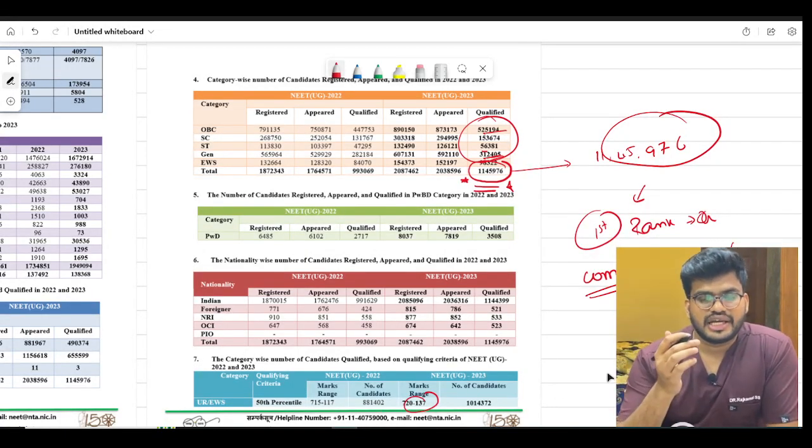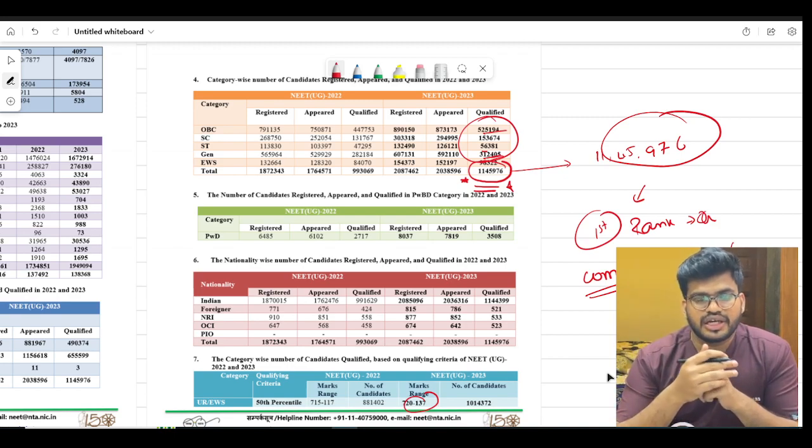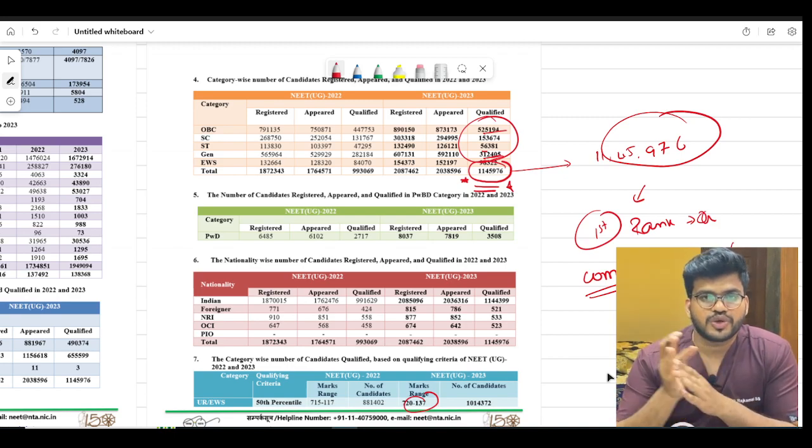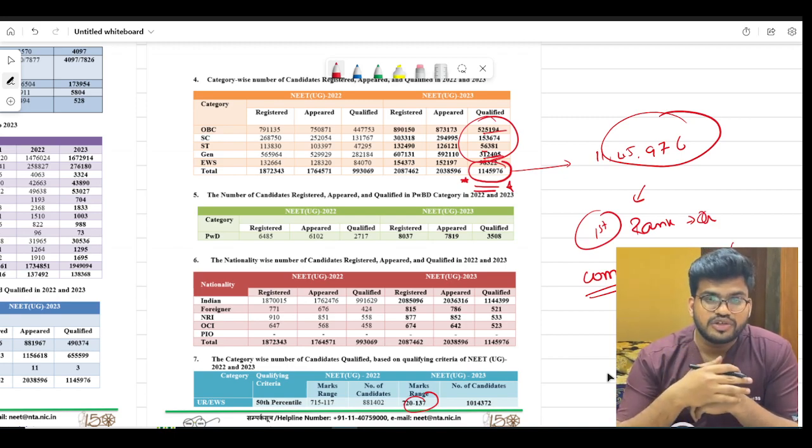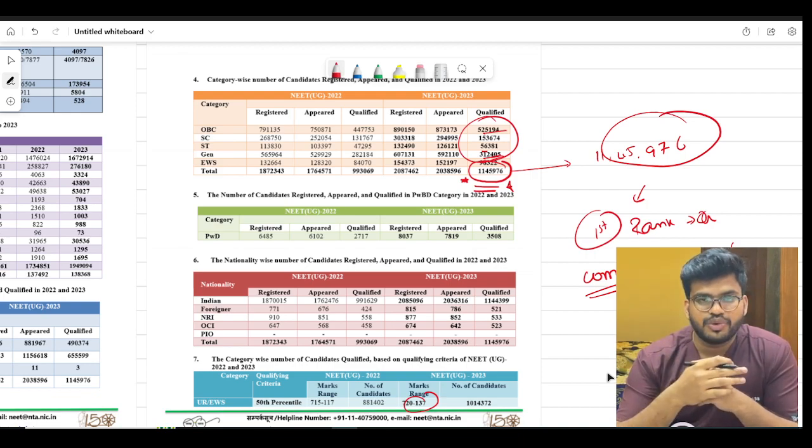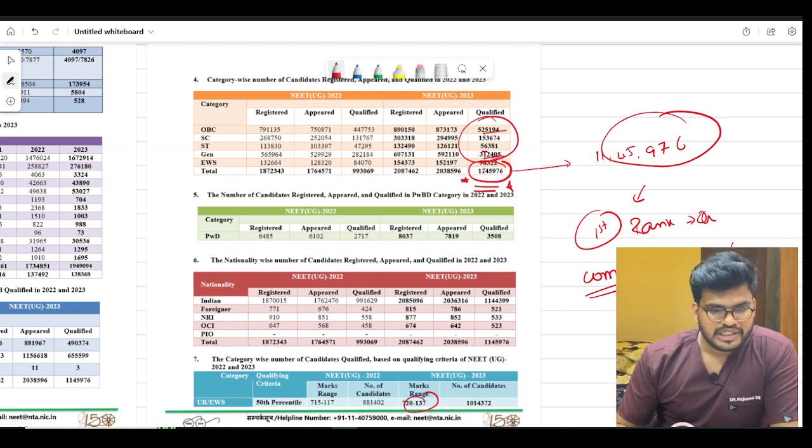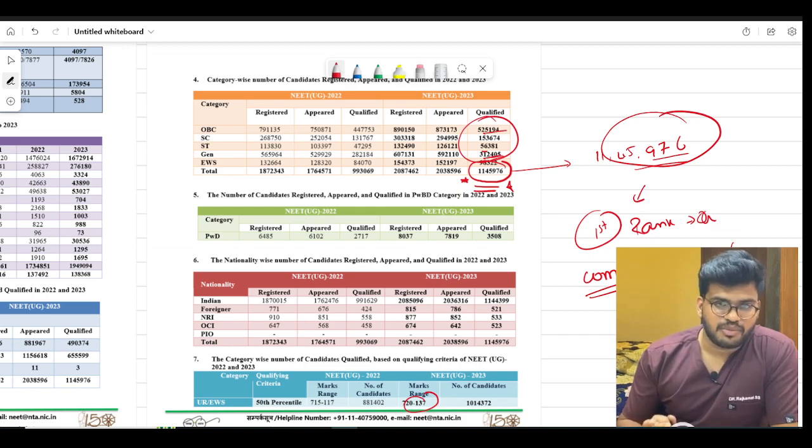Hello guys, NTA declared the new NEET results 2023. Congratulations to all of you who scored good marks. The NTA also released some documents - no need to worry about that, I will just point out what's important to you. As you can see, 11,45,976 students qualified the exam.